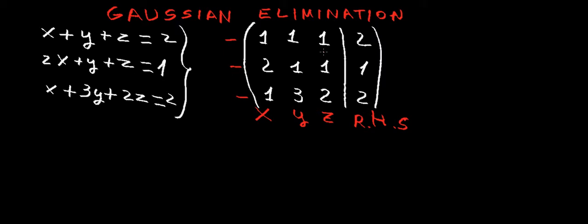The aim of Gaussian elimination is to get an upper triangular matrix — to convert this matrix into an upper triangular form. That means the values below the diagonal, these three values here, have to be zeros. So we're going to be converting the 2 into a 0, the 1 into a 0, and the 3 into a 0.